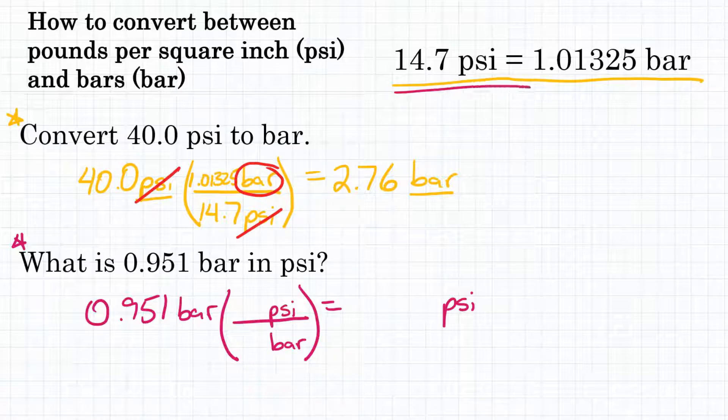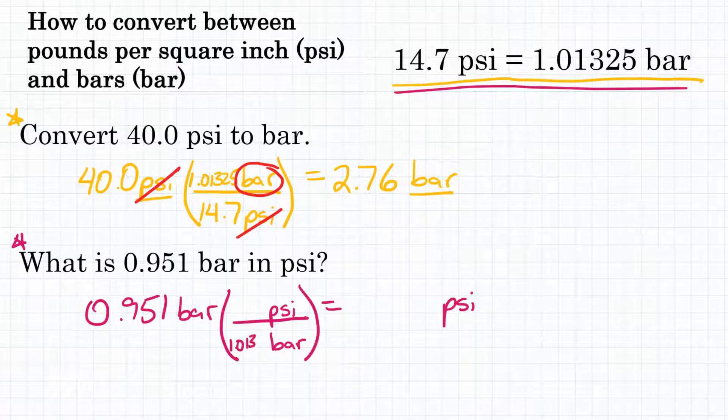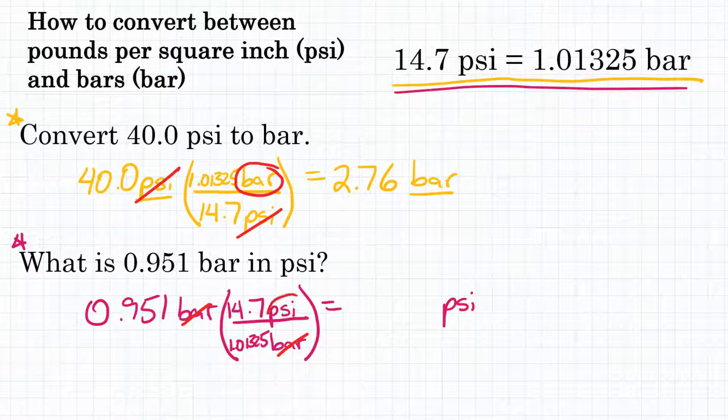We're using that same relationship, where 1.01325 bar is equal to 14.7 PSI, and why it's flipped is because since we're starting with bars, we need that on the bottom of our conversion factor so that PSI is on top. Now we can plug this in our calculator and solve.